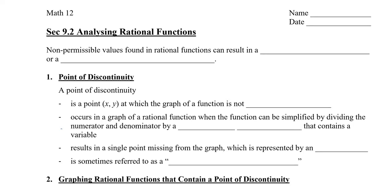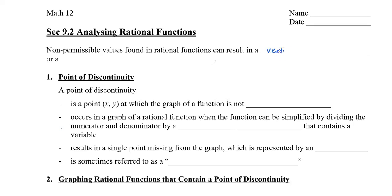In this video, we're going to take a look at non-permissible values in rational functions. In particular, we're going to look at the point of discontinuity. When we graph a rational function, the non-permissible value can result in one of two features on the graph: it can result in a vertical asymptote or a point of discontinuity.